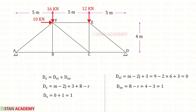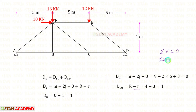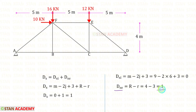Let us find the degree of external static indeterminacy. R is the total number of reactions to be found. At A and D, we have hinged supports. In hinged supports, there will be 2 reactions each, so 2 plus 2 equals 4. Small r is the number of available equilibrium conditions — there are 3 conditions: Sigma V = 0, Sigma M = 0, and Sigma H = 0. So small r is 3. For DSE, we will get 1.